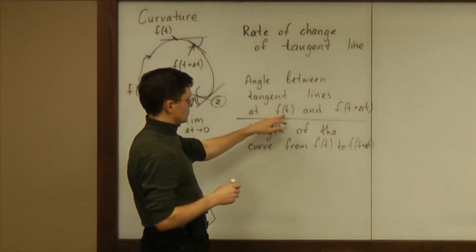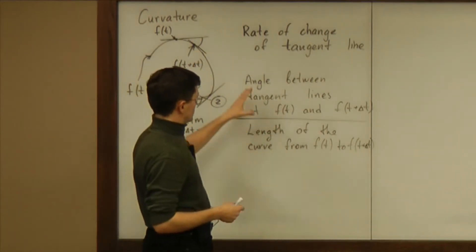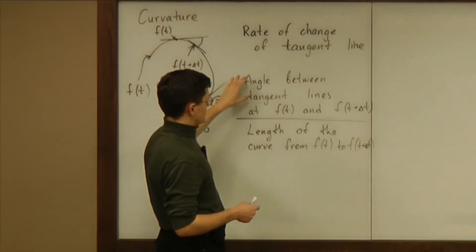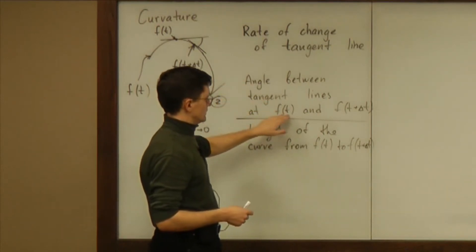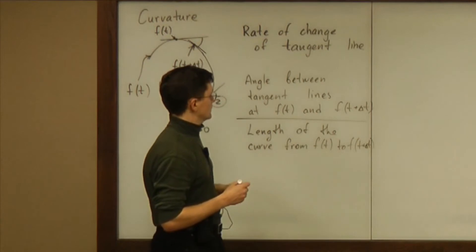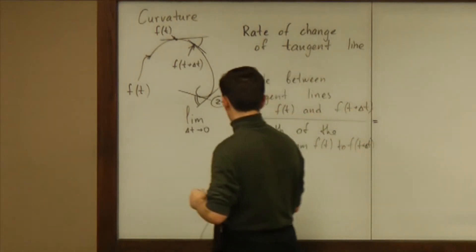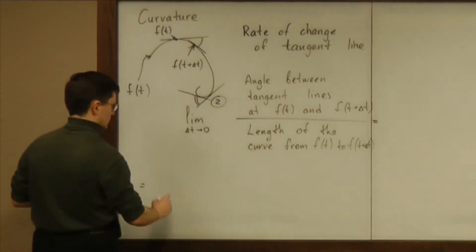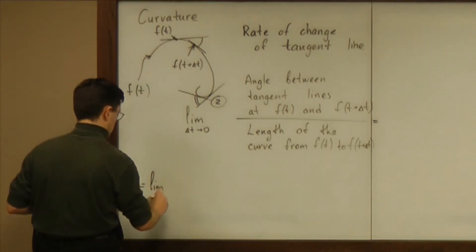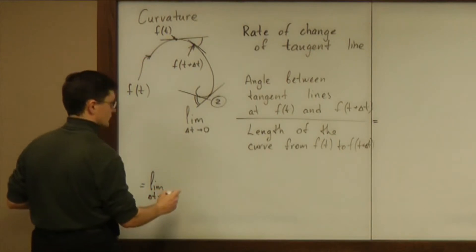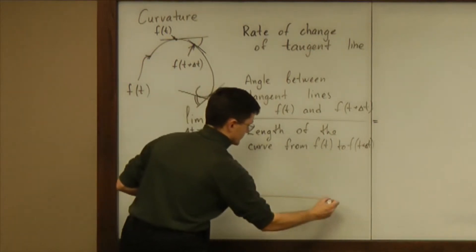Now, given the formula for f of t, given that function f, how can we compute the angle between tangent lines at these two points? So let me continue this with some computation using precise formulas.